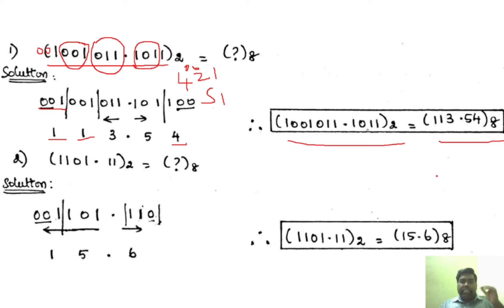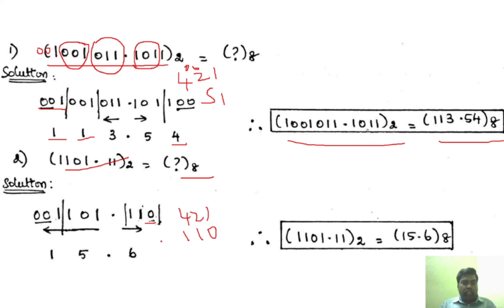For the second binary to octal example, we group the integer part into 3 bits from LSB, adding an extra zero to the leftmost incomplete group. Grouping from MSB for the fractional part, we add a zero to complete the last group. Using 4-2-1 code: 1 1 0 is 6, 1 0 1 is 5, and 0 0 1 is 1. The answer is 1 5 . 6, showing how to convert binary to octal.